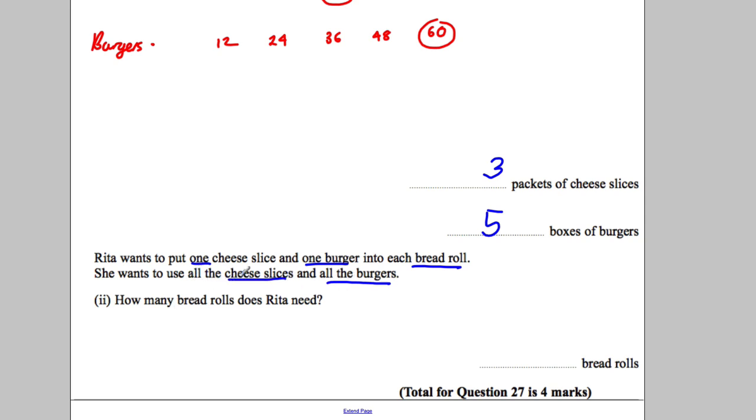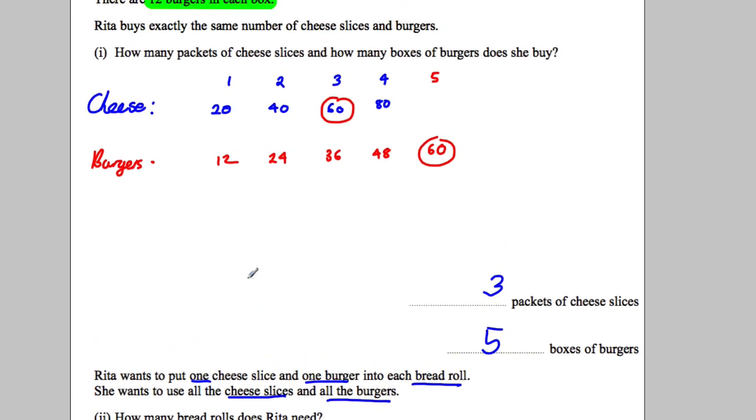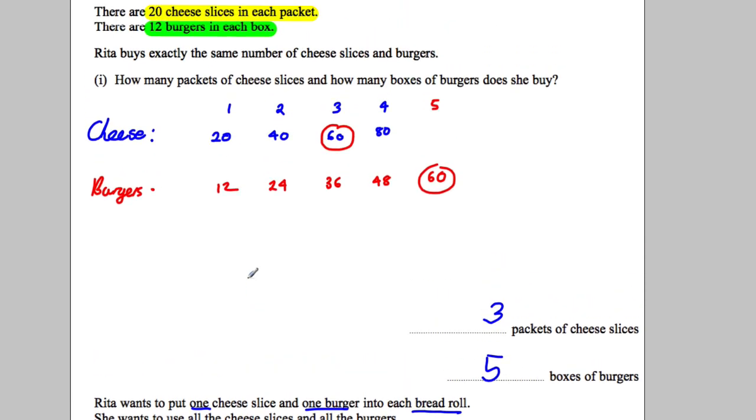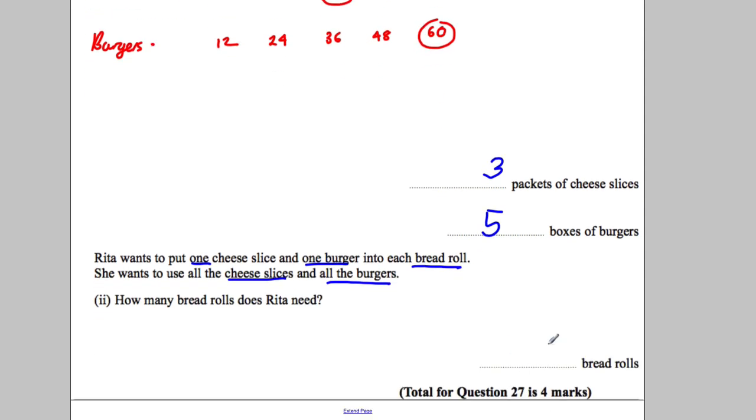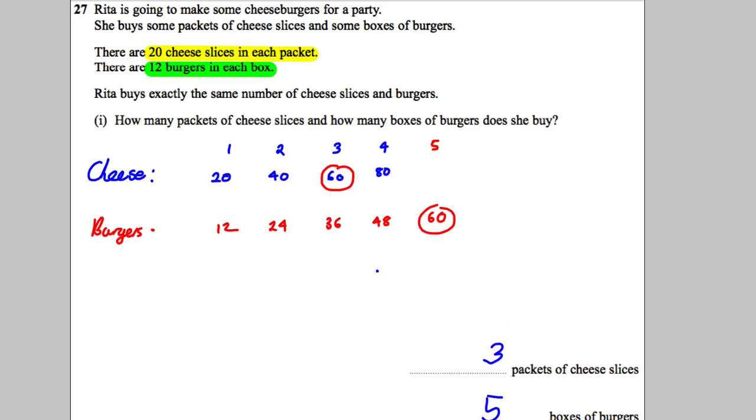Well, you've got the answer up here. And clearly it's 60 because if you buy three packets of cheese, you get 60 cheese. If you buy five boxes of burgers, you get 60. So therefore she must need 60 bread rolls. It's simple and straightforward from what you've done above.